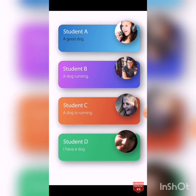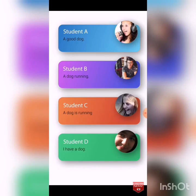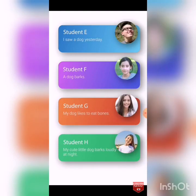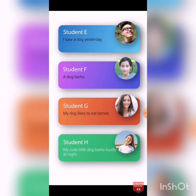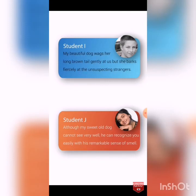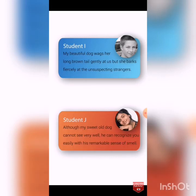Student A wrote: 'A good dog.' Student B: 'A dog running.' Student C: 'A dog is running.' Student D: 'I have a dog.' Student E: 'I saw a dog yesterday.' Student F: 'A dog barks.' Student G: 'My dog likes to eat bones.' Student H: 'My cute little dog barks loudly at night.' Student I: 'My beautiful dog wags her long brown tail gently at us, but she barks fiercely at the unsuspecting strangers.' Student J wrote: 'Although my sweet old dog cannot see very well, he can recognize you easily with his remarkable sense of smell.'